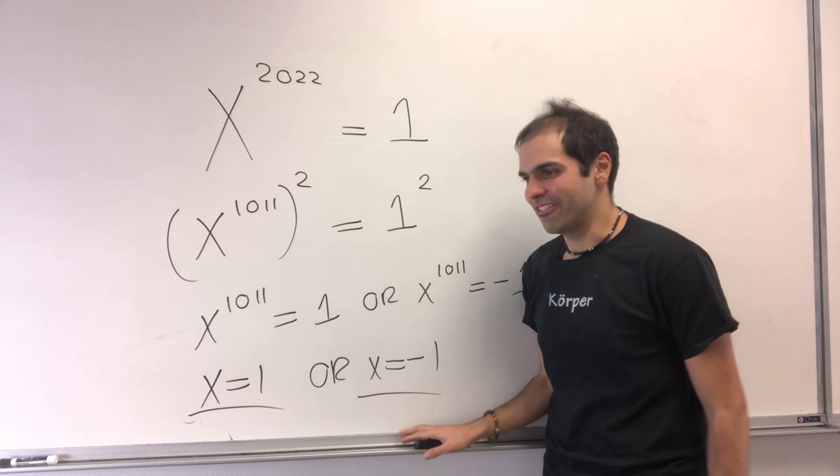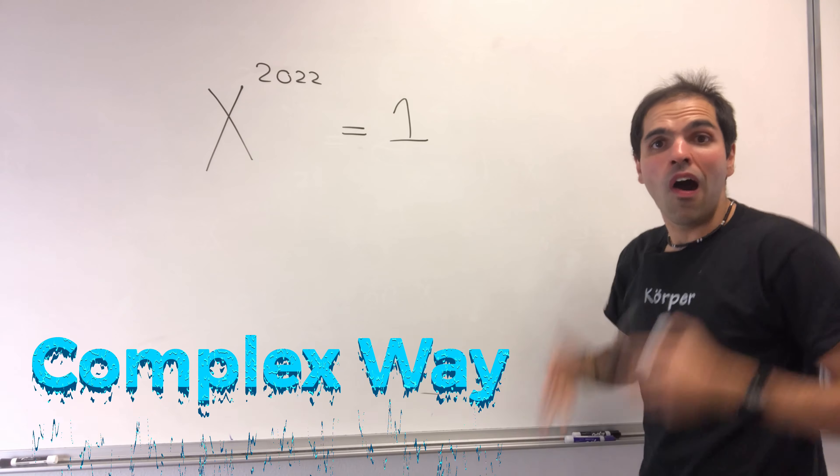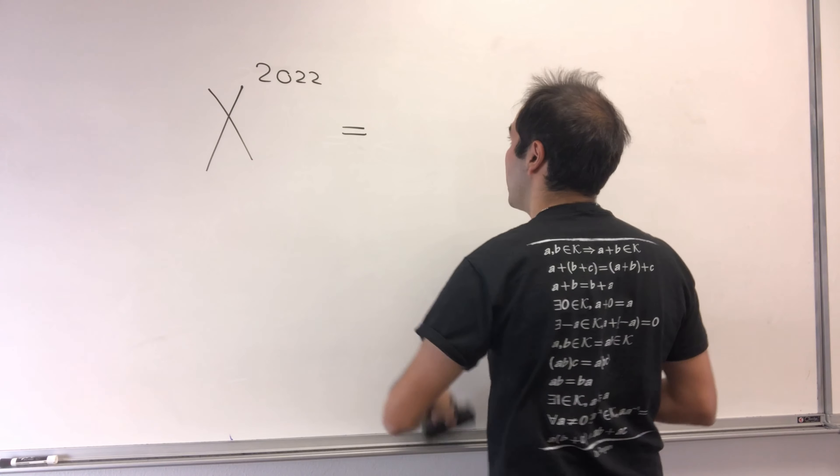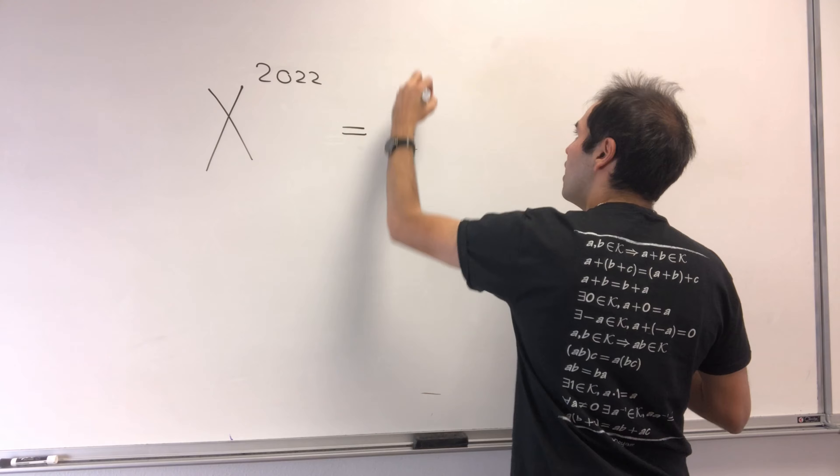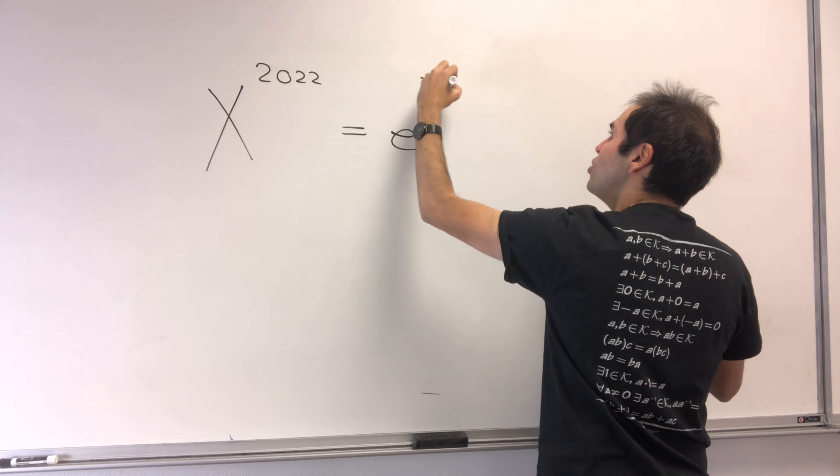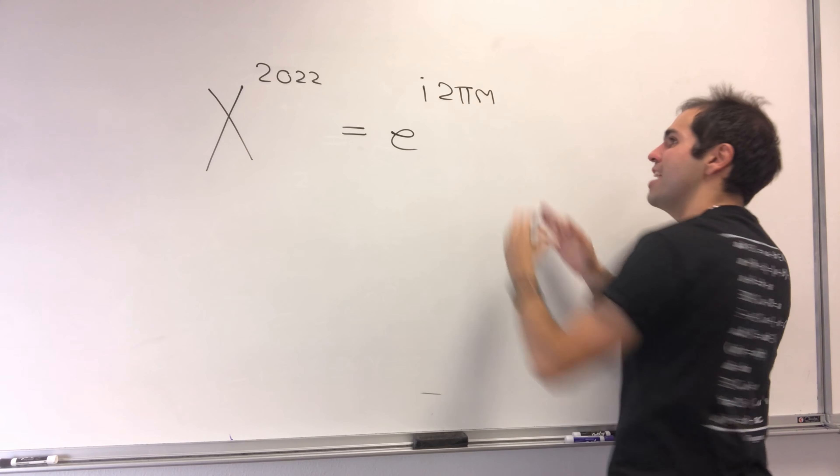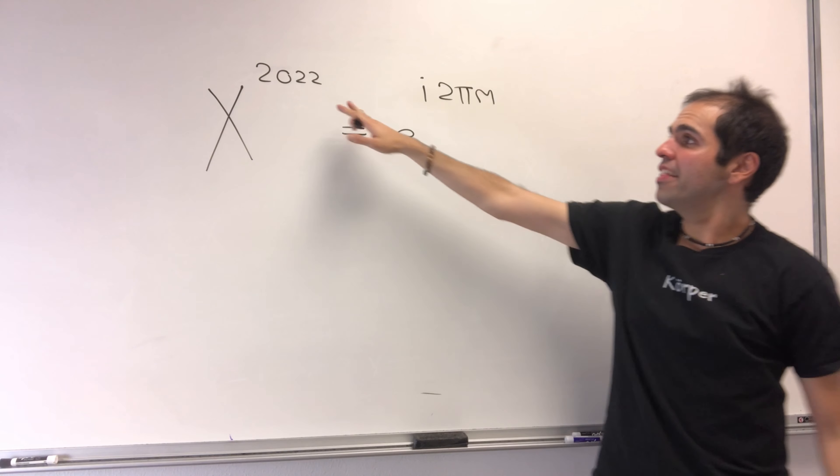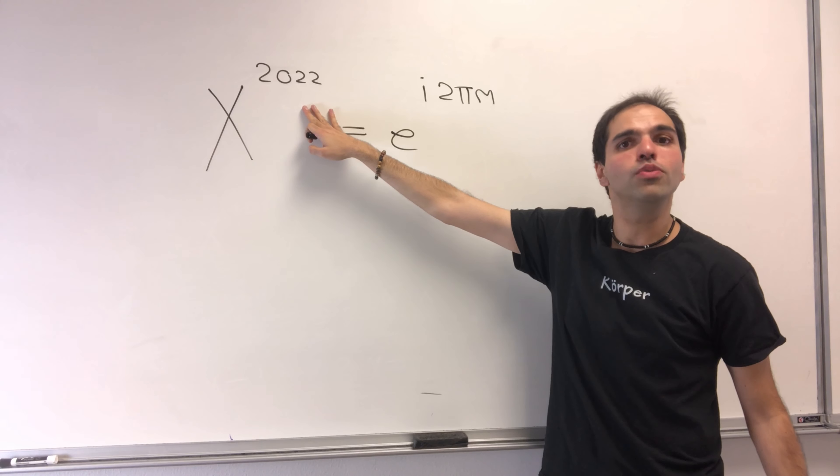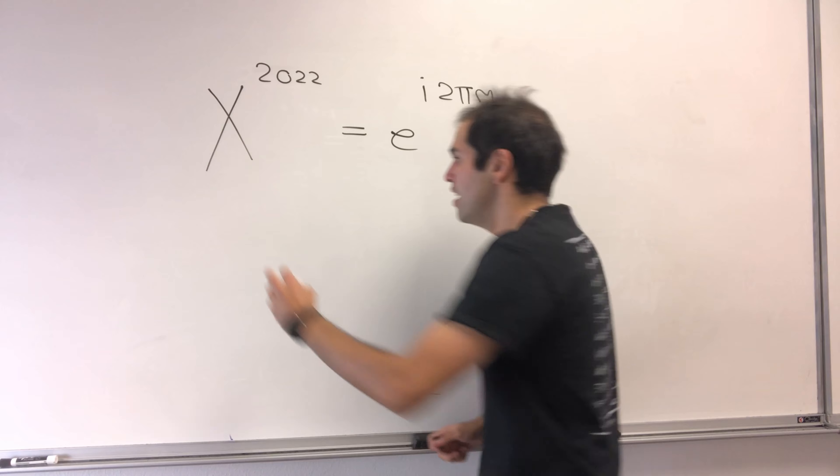So what is 1? Well, it's just another name for e^(i·2π·m), where m is any integer. Therefore, taking the 2022nd root, we get x is e^(i·2π·m/2022).